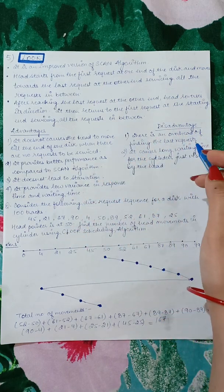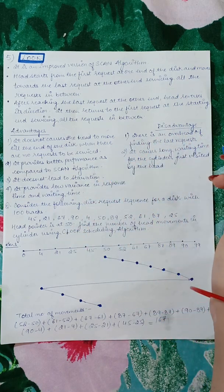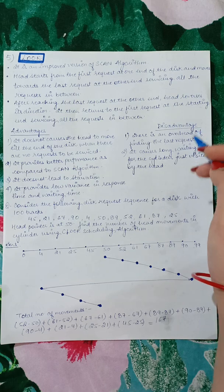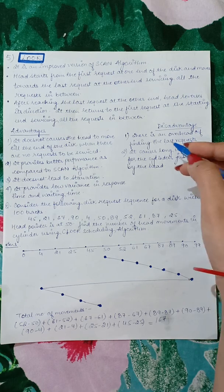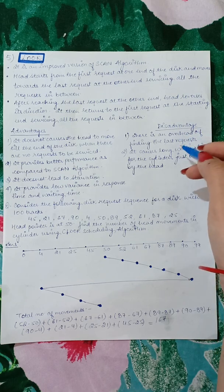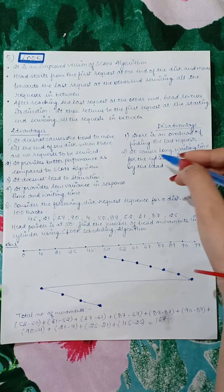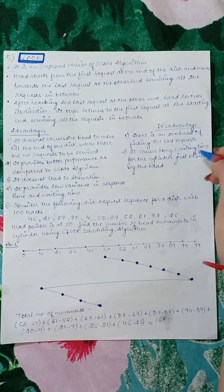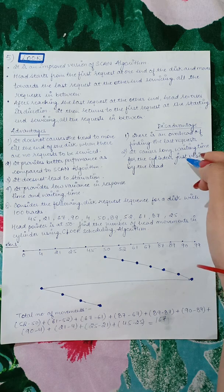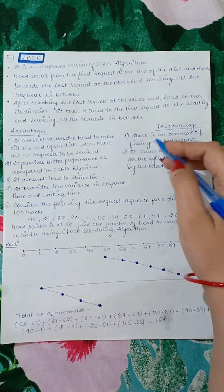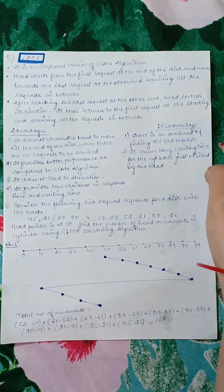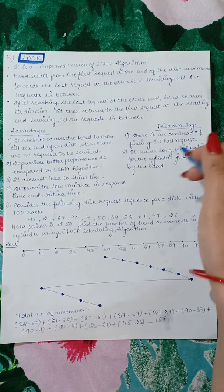The disadvantage of LOOK is knowing where the last request is — there is an overhead of finding the last request. It also causes long waiting time for the cylinders just visited by the head, which is the same issue present in the SCAN algorithm as well.